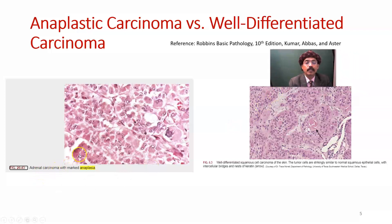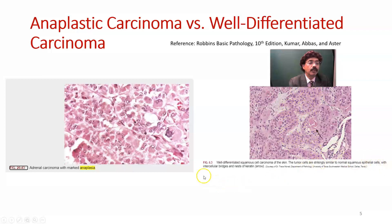For example, here is adrenal carcinoma — a section from the adrenal cortex showing marked anaplasia. And here is a well-differentiated squamous cell carcinoma of the skin, where the tumour cells are strikingly similar to normal squamous epithelium. These are epithelial cells with intercellular bridges and nests of keratin. So this is well-differentiated squamous cell carcinoma — this is squamous cell carcinoma without anaplasia.